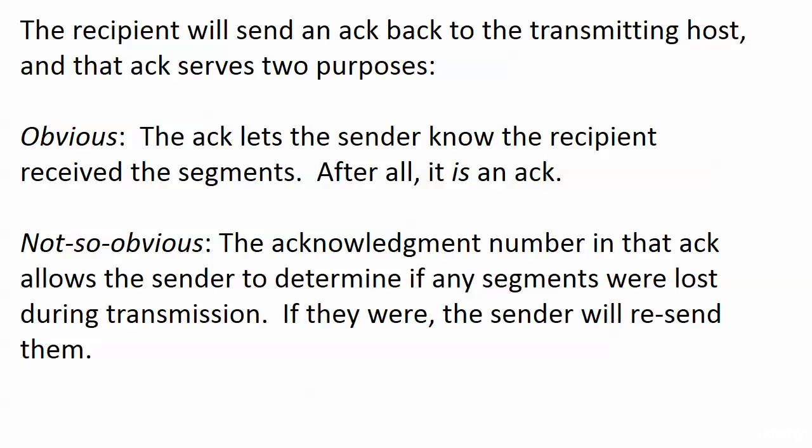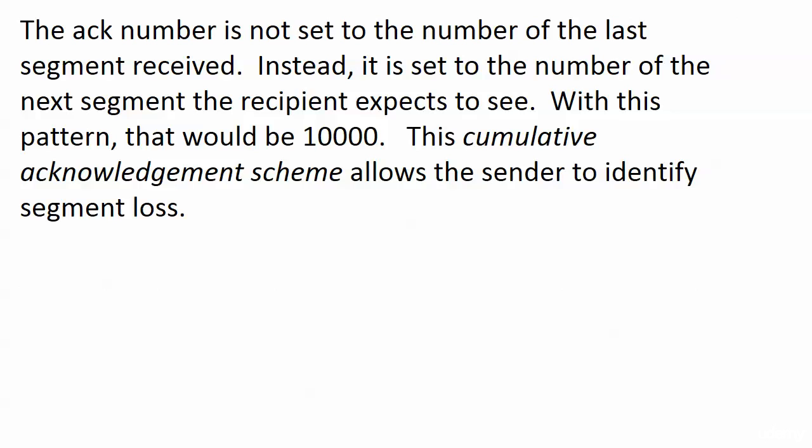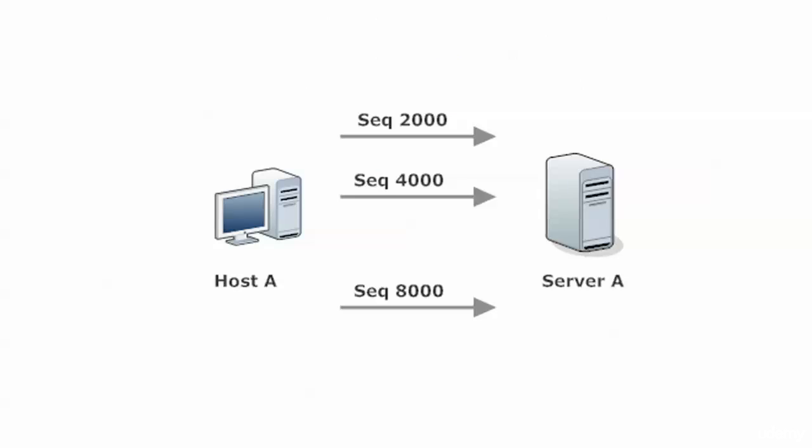The ACK number is not set to the number of the last segment received. Instead, it's set to the number of the next segment the recipient expects to see — this is called a cumulative acknowledgement scheme. With our pattern, the next number would be 10,000. This allows the sender to identify segment loss — for example, if the server receives 2,000, 4,000, and 8,000, but segment 6,000 was lost along the way. We'll pick up there in the next video.